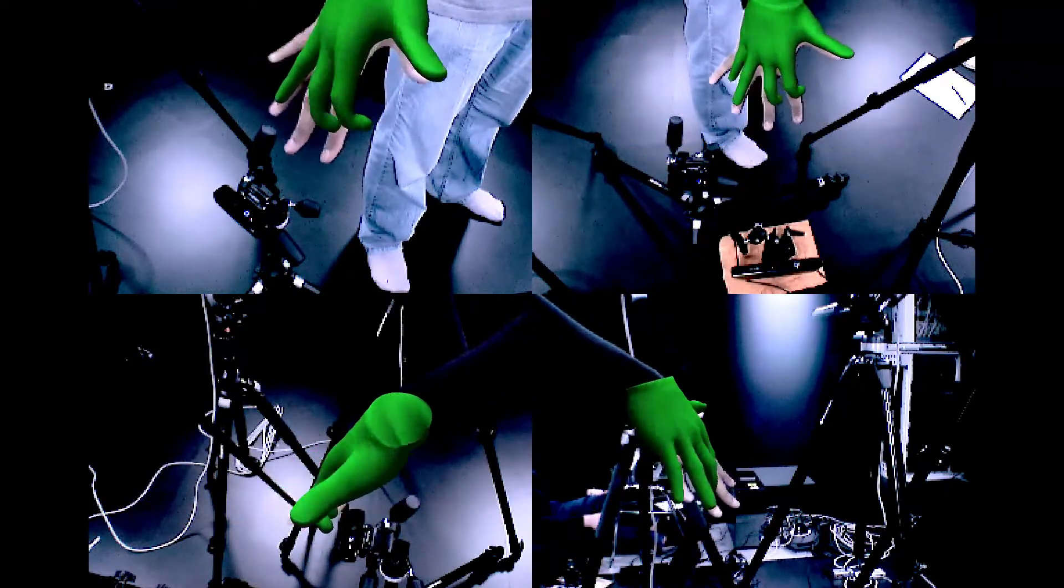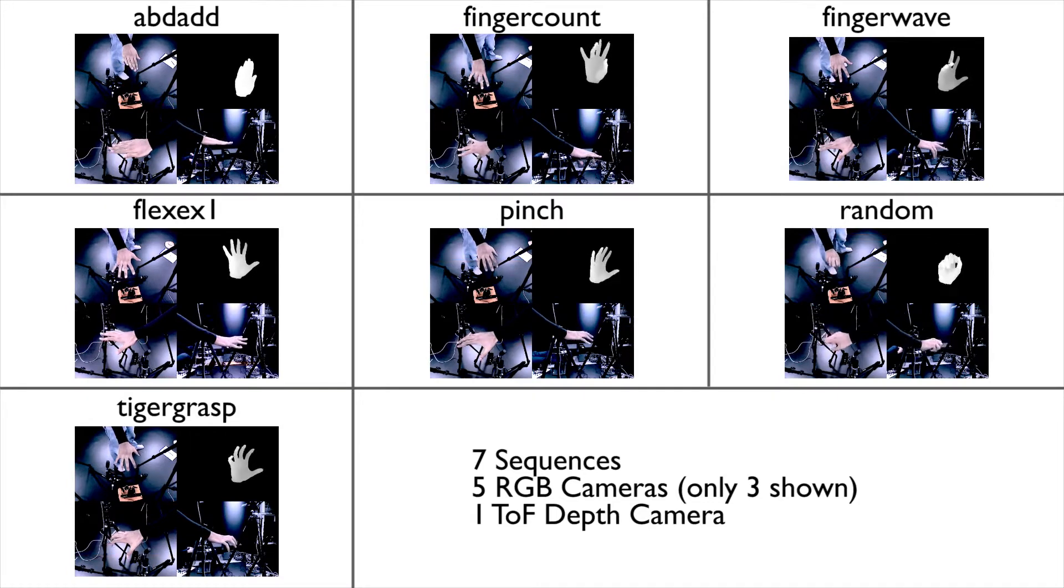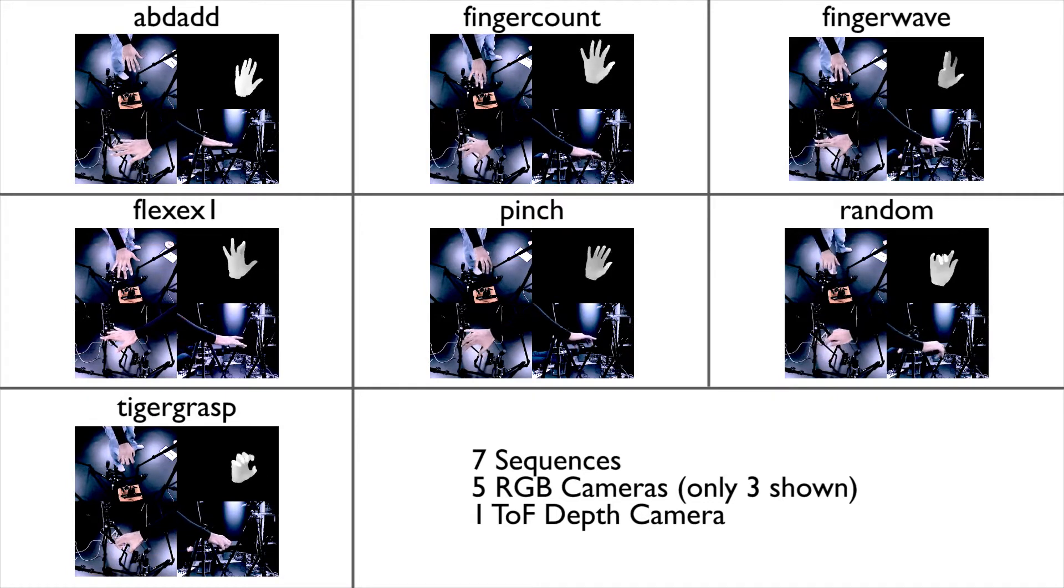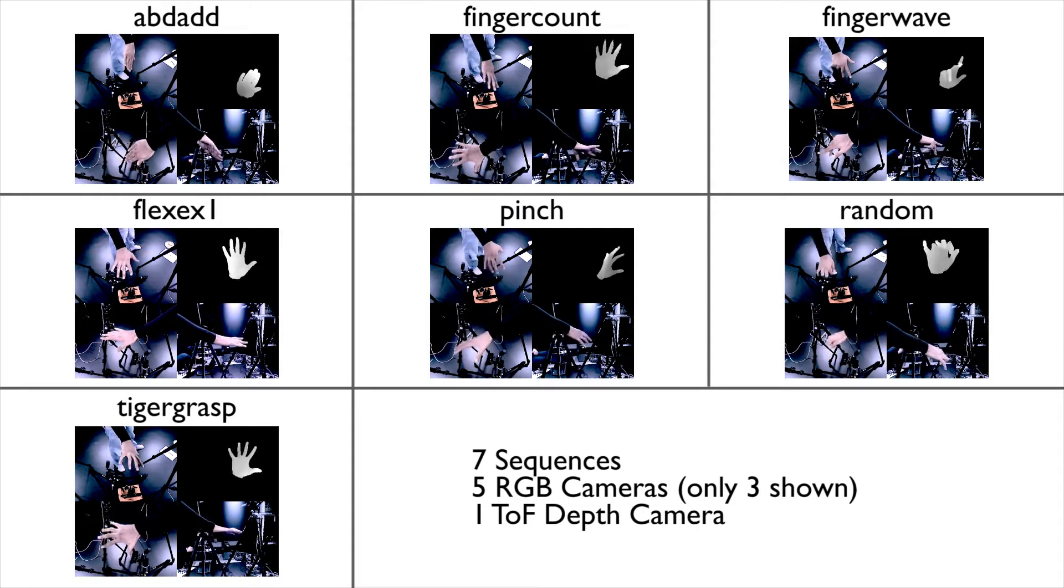The input to our method consists of synchronized and calibrated images from multiple RGB cameras and a monocular depth sensor. We captured seven sequences consisting of slow and fast hand motions.